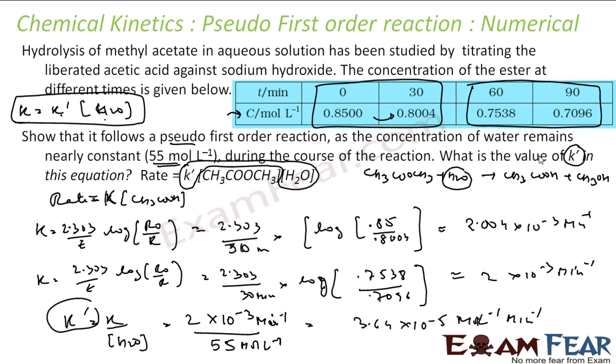So that is the value of K dash, because the question is asking me the value of K dash, not the value of K. K I already found two values just to make sure that the equation which I am using is correct. It is the first-order reaction. To prove that, I found two values of K using first-order reaction formulas, and both the values were same. That proves that it is a first-order reaction. Then I have to find the value of K dash. I know K dash is nothing but K by concentration of water. I know the value of K, and I know the concentration of water, and I get the value of K dash.